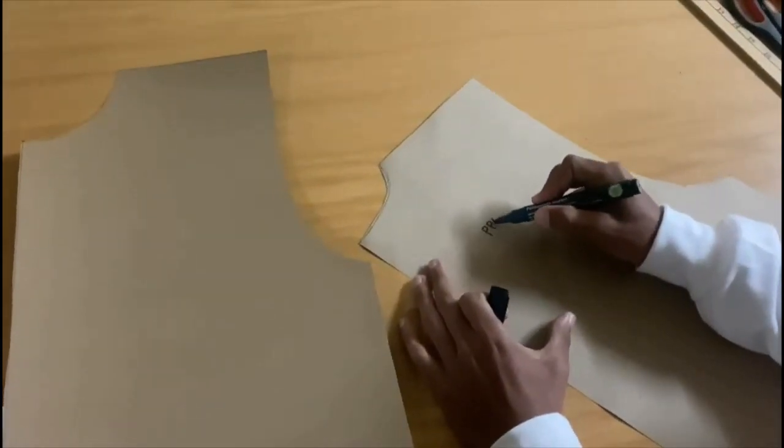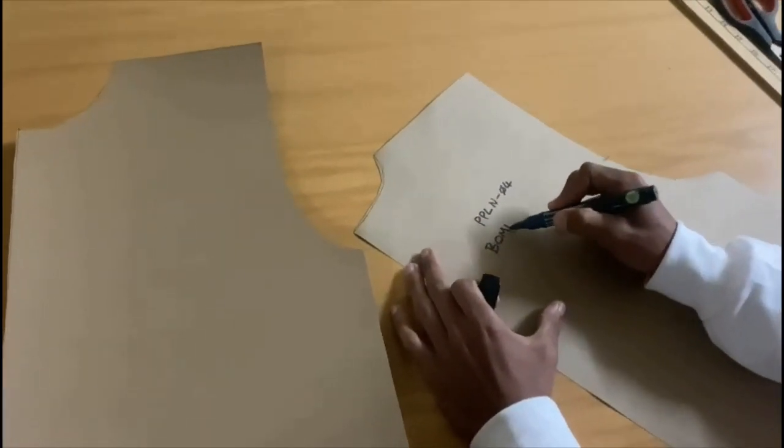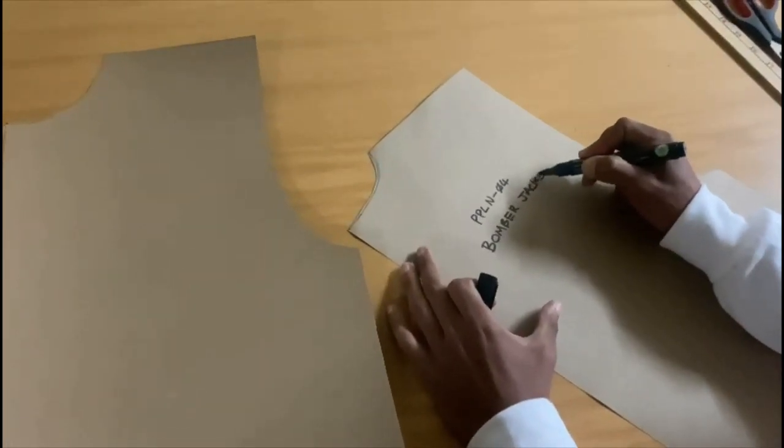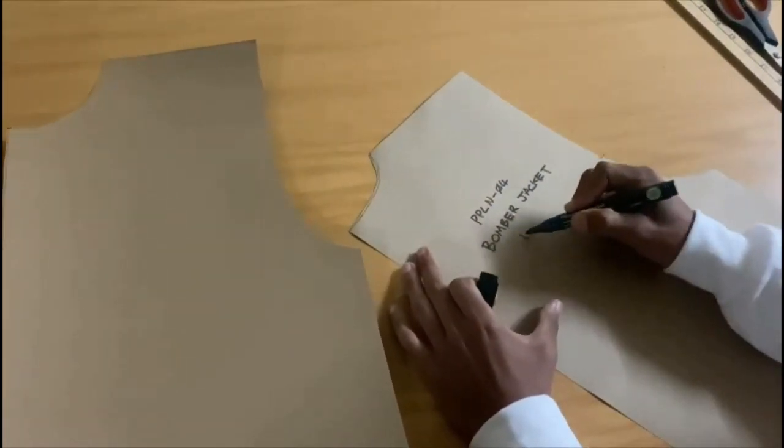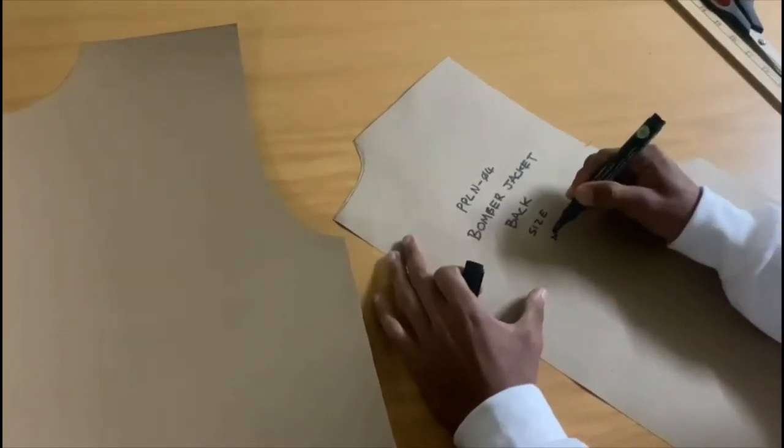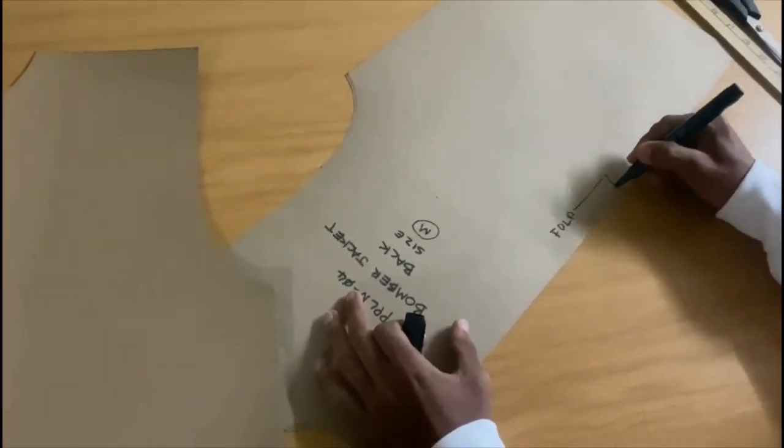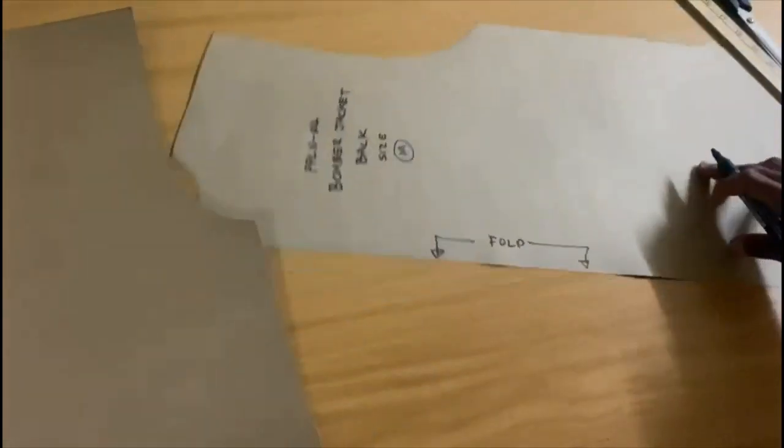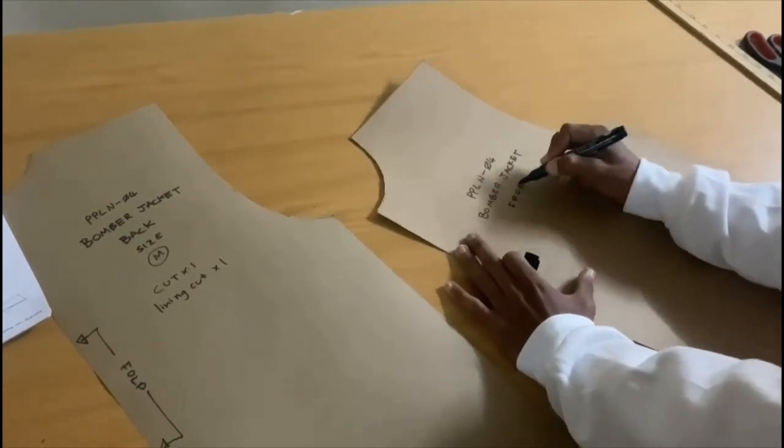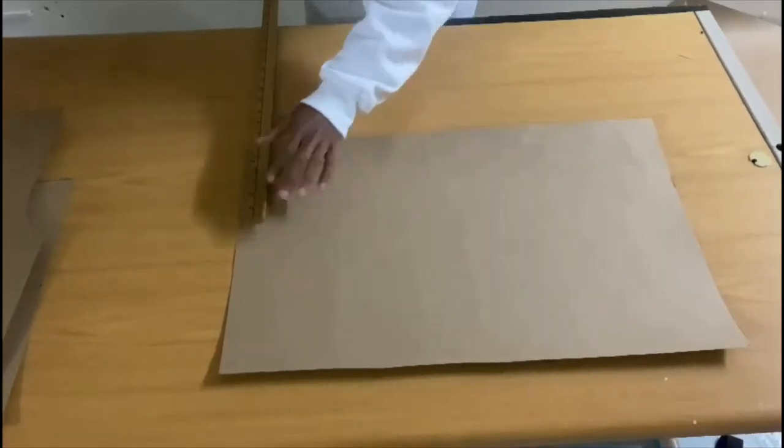But yeah, after that, you're going to want to label your patterns. And I start with my pattern code. Then I write what the pattern is for. It's a bomber jacket, right? Obviously. After that, I write what the pattern piece is. So it's a back. Then I write the size. Then I write where the fold is going to be. And that is all I need. The last thing you want to write down though, is how many pieces you have to cut.